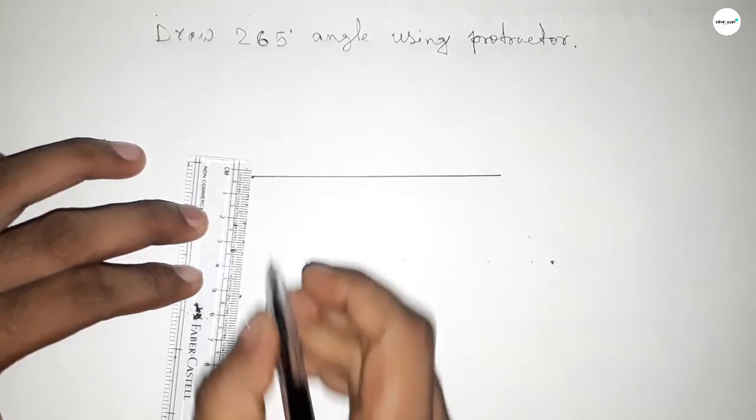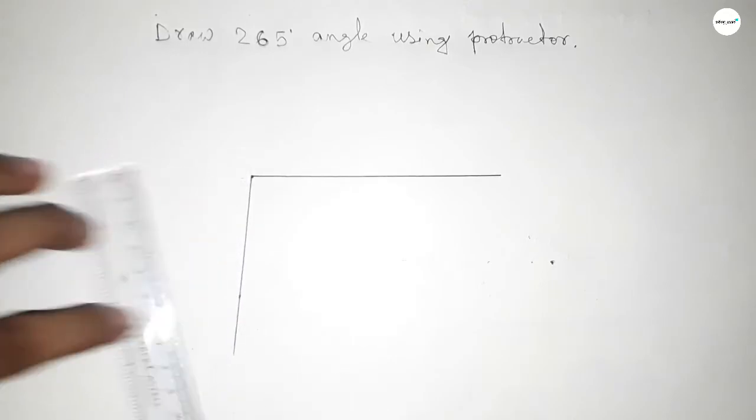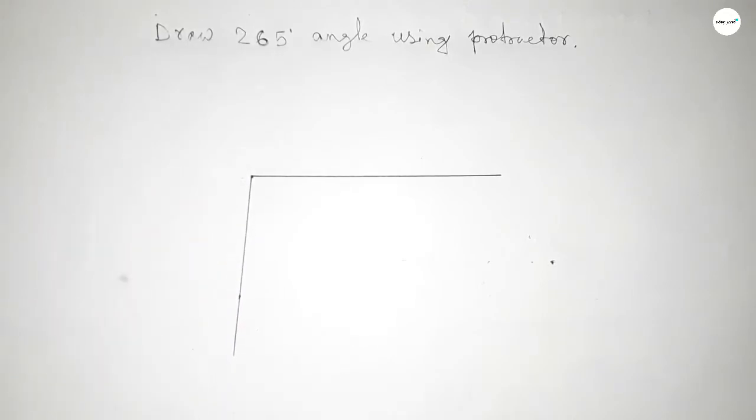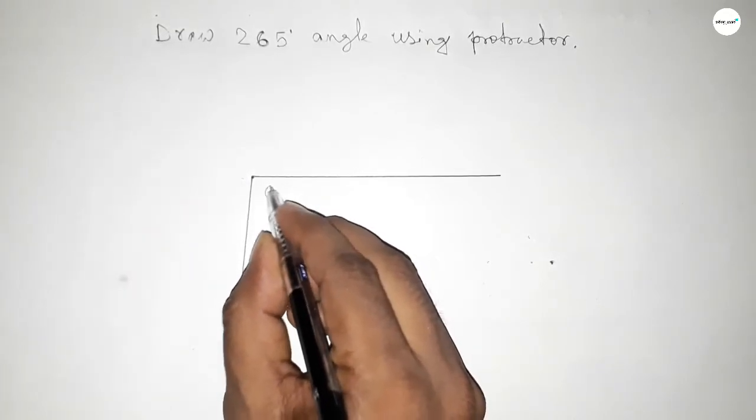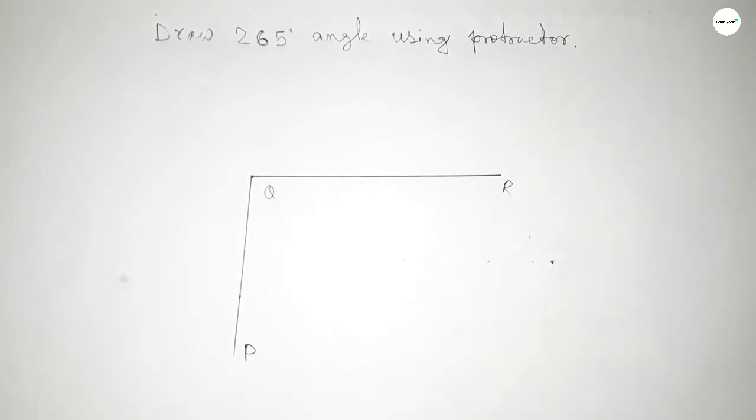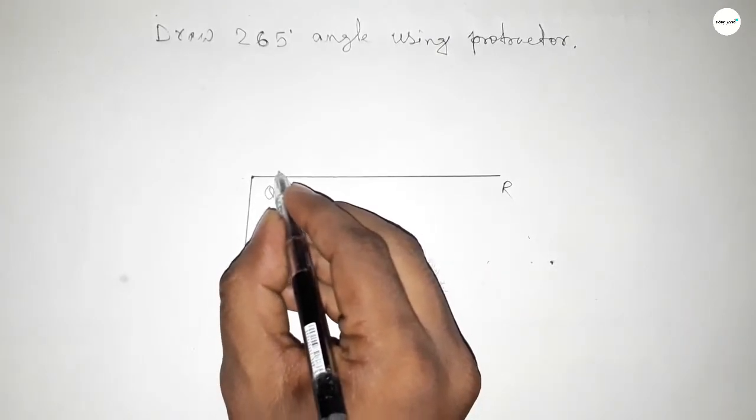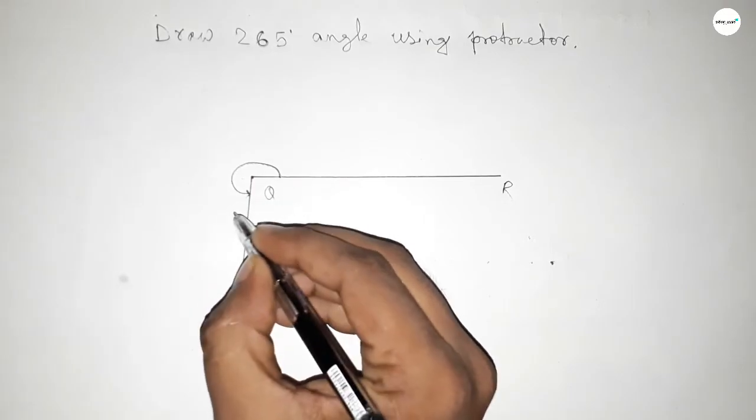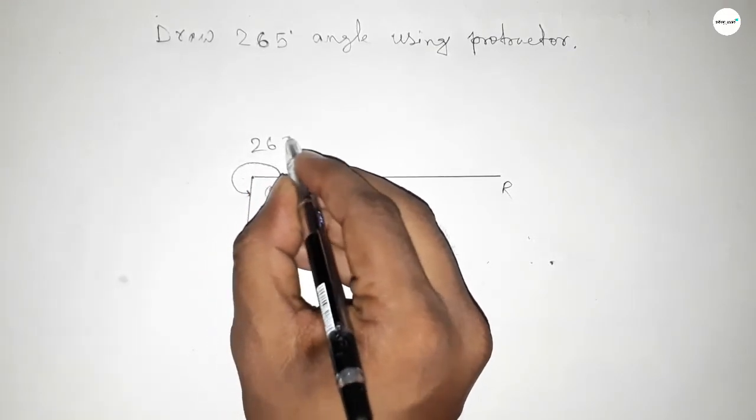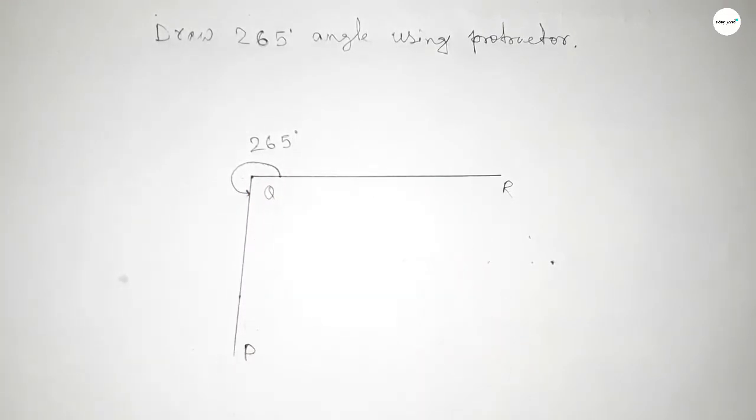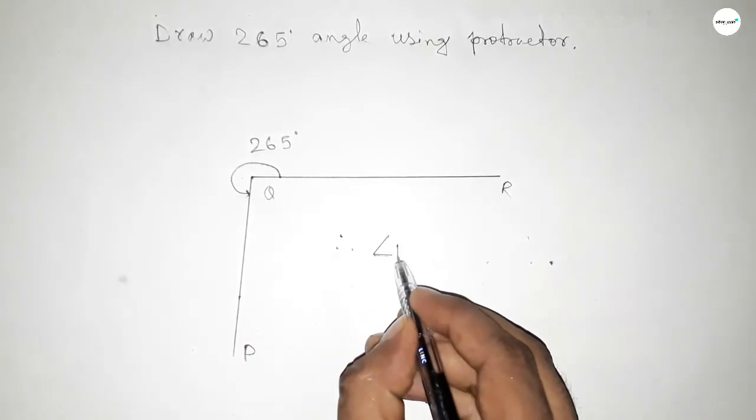So now joining this. So this is P, Q, and R. So angle PQR is this. Okay, so this is 265-degree angle. So therefore angle PQR...